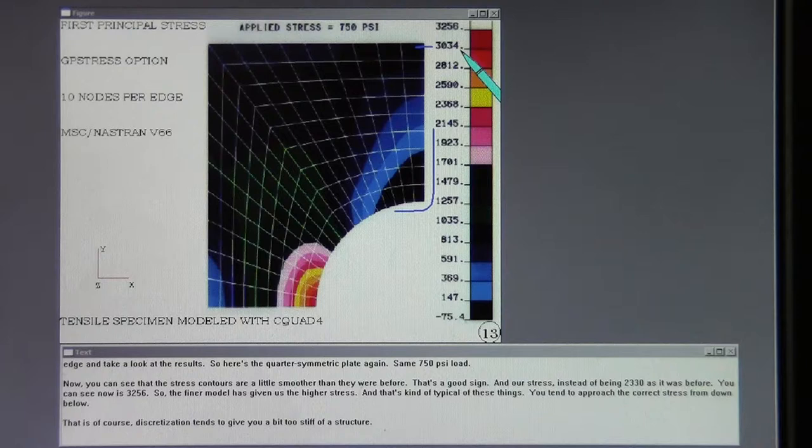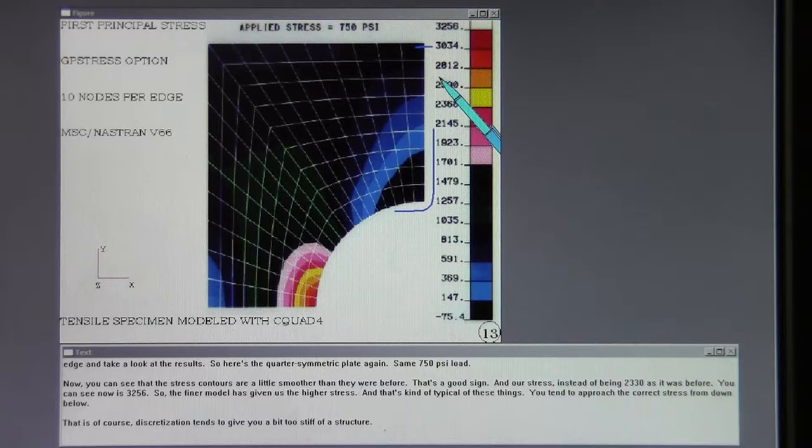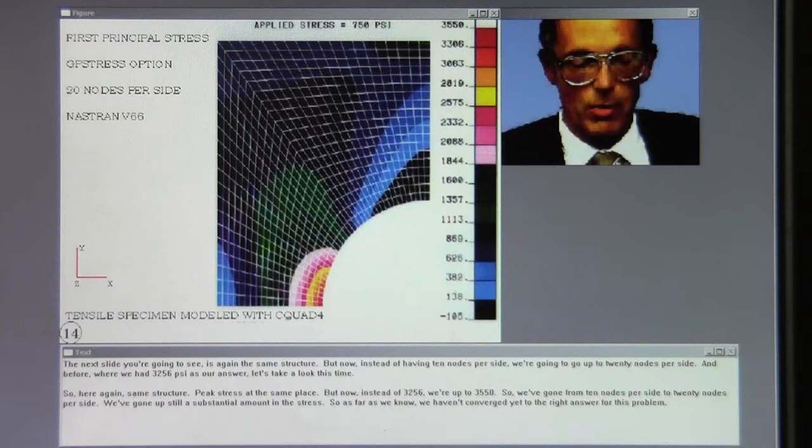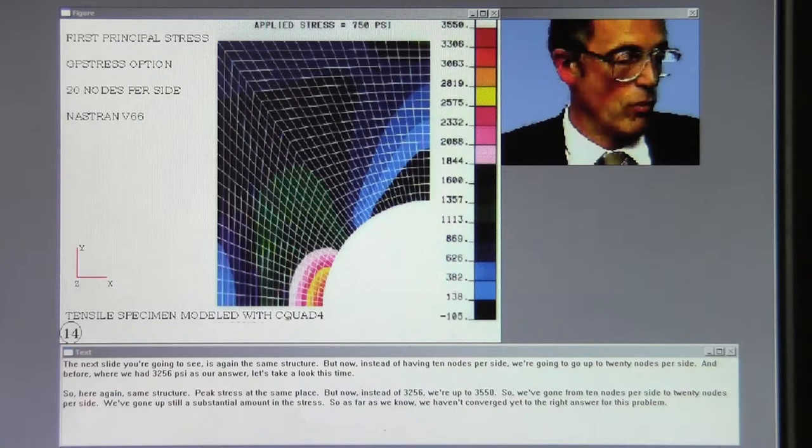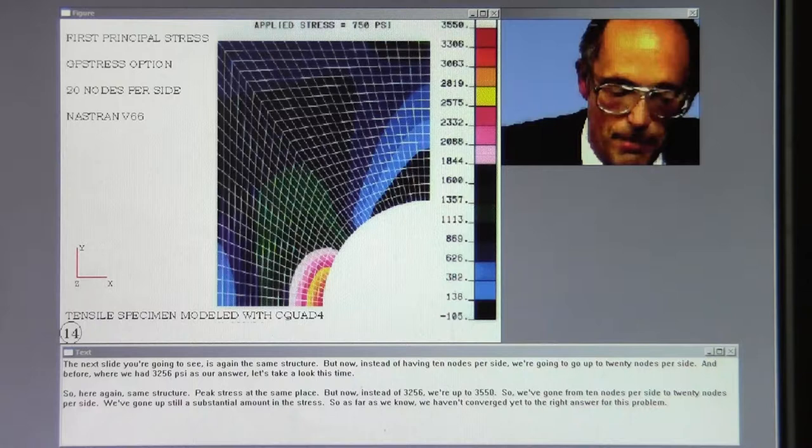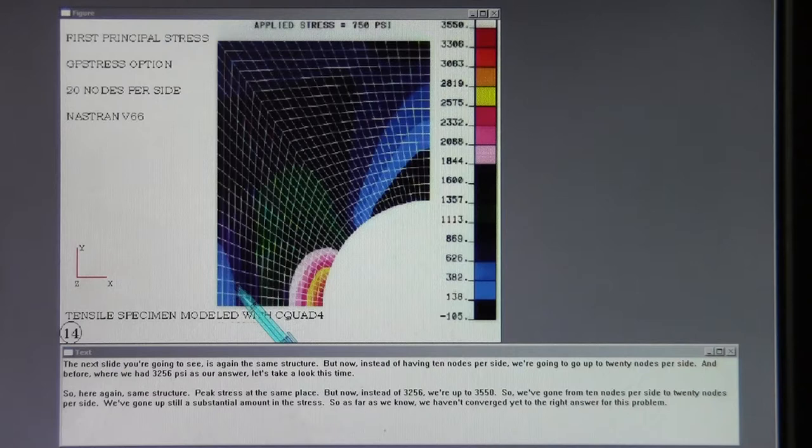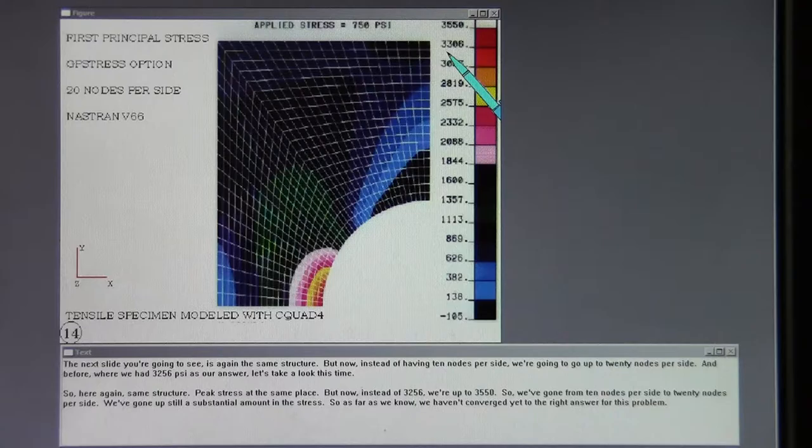The next slide you're going to see is again the same structure, but now instead of having 10 nodes per side, we're going to go up to 20 nodes per side. And before where we had 3256 psi as our answer, let's take a look this time. So here again, same structure, peak stress at the same place, but now instead of 3256 we're up to 3550. So we've gone from 10 nodes per side to 20 nodes per side. We've gone up still a substantial amount in the stress. So as far as we know, we haven't converged yet to the right answer for this problem.